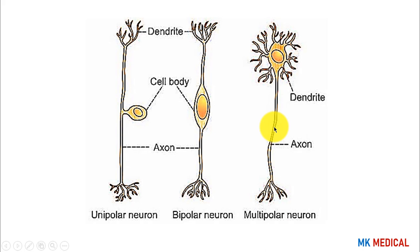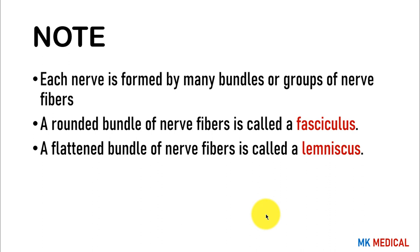Each nerve is formed by many bundles or groups of nerve fibers. A rounded bundle of nerve fibers is referred to as a fasciculus — plural fasciculi. A flattened bundle of nerve fibers is called a lemniscus — plural lemnisci. Keep these terms in mind as they will become clear in subsequent lectures.